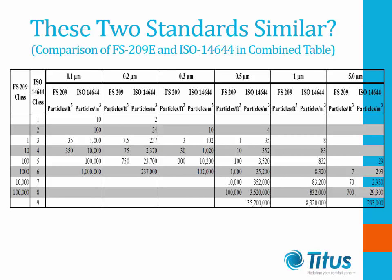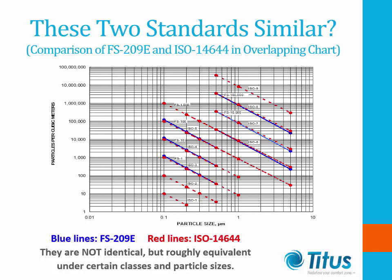Federal Standard 209 has six classes defined in five particle sizes: 0.1, 0.2, 0.3, 0.5, and 5.0 microns. ISO has nine classes — two classes cleaner and one class dirtier — defined in six particle sizes, including an additional 1 micron size. If we overlay the two standards on a chart, blue lines represent Federal Standards and red dashed lines represent ISO standards. These two standards are not identical, but in the industry we roughly consider them equivalent under certain classes and particle sizes.